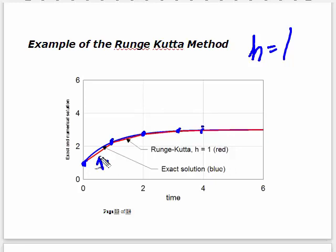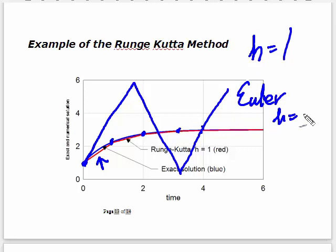Remember what you got with Euler's, started here, it went way up, somewhere up to here, came down, did like this, so it was completely erroneous. This was Euler's when H was 1. So you can see for the increase in complexity, you get a big savings as far as the time step that you can take. You can take a bigger time step, and you get very good agreement.